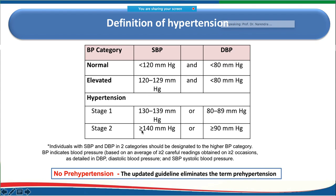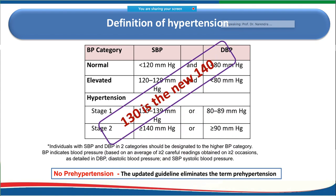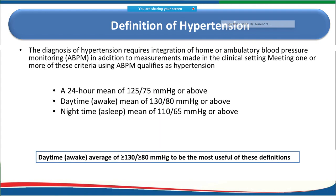In the newer guidelines, the term 'pre-hypertension' has been eliminated. The threshold has been lowered — what was previously 140 is now 130, so 130 is the new 140. The guidelines also integrate home and ambulatory blood pressure monitoring concepts.